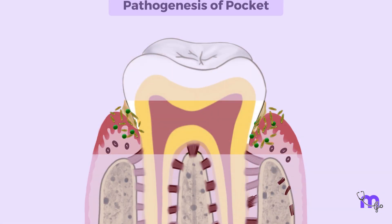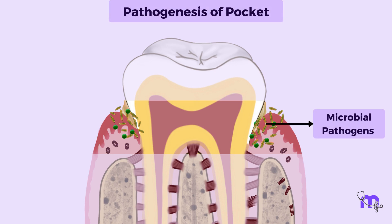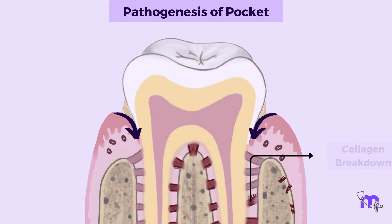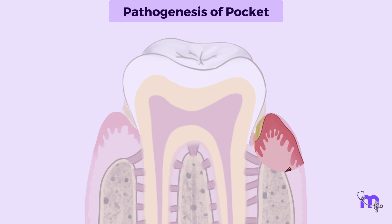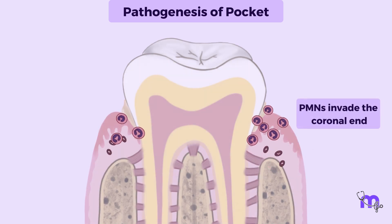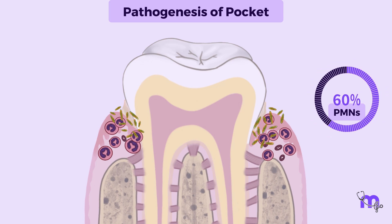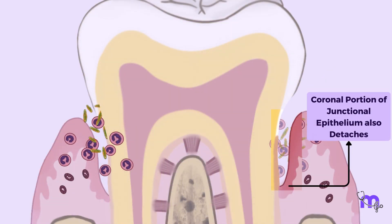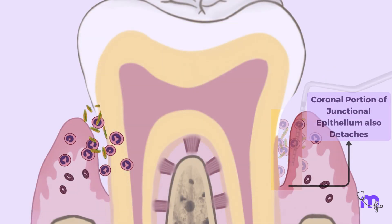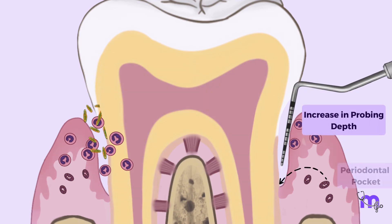Let's study the pathogenesis of pocket. Microbial pathogens cause the inflammation of gingiva. As the inflammation spreads, it causes breakdown of collagen in connective tissues. Due to collagen loss, the apical cells of junctional epithelium proliferate along the route by giving out finger-like projections. Then PMNs invade the coronal end of junctional epithelium to defend this process. When the volume of PMNs reaches 60% or more, the coronal portion of junctional epithelium also detaches. This leads to an increase in probing depth called a periodontal pocket.